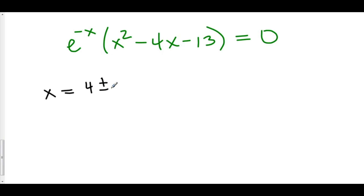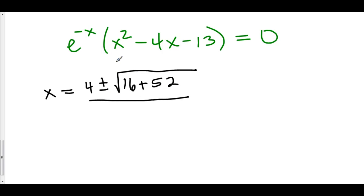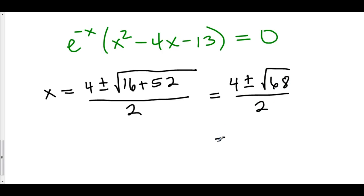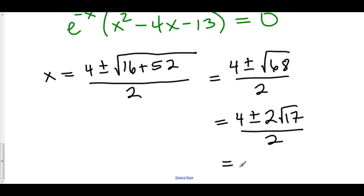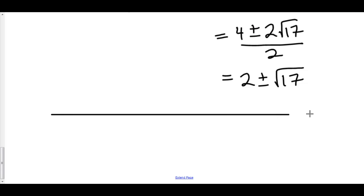x equals negative b plus or minus the square root of b² minus 4ac, where c gives positive 52, all over 2a. So 16 plus 52 is 68, giving x equals 4 plus or minus the square root of 68, over 2. Since 68 equals 4 times 17, the square root of 68 is 2√17, so x equals 4 plus or minus 2√17, all over 2, which simplifies to x equals 2 plus or minus √17. We don't know for sure whether these are inflection points yet, but we can determine this using our second derivative analysis.